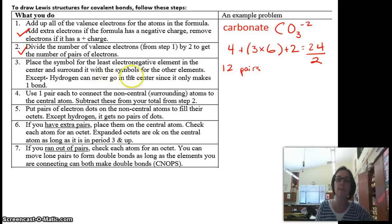I'm going to place the symbol for the least electronegative element in the center and surround it with the symbols for the other elements. Well, carbon is farther to the left on the periodic table, meaning it's less electronegative. So I'm going to put the carbon in the middle, and I'm going to surround it with the 3 oxygens.